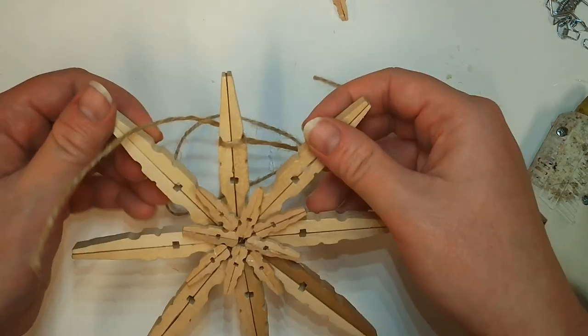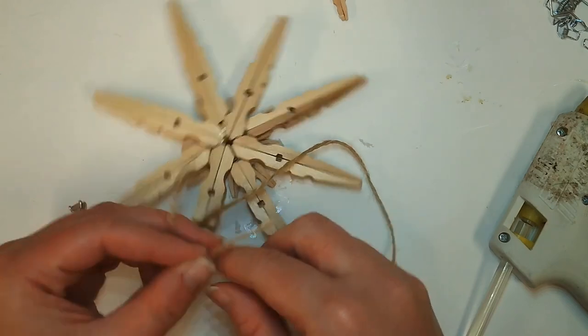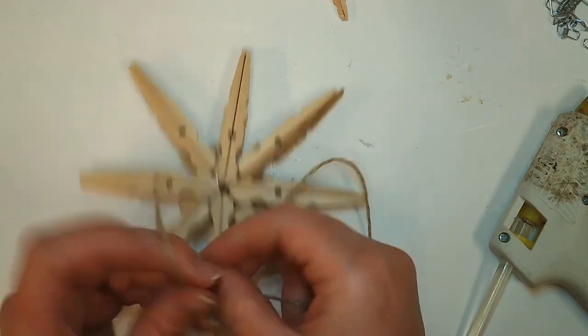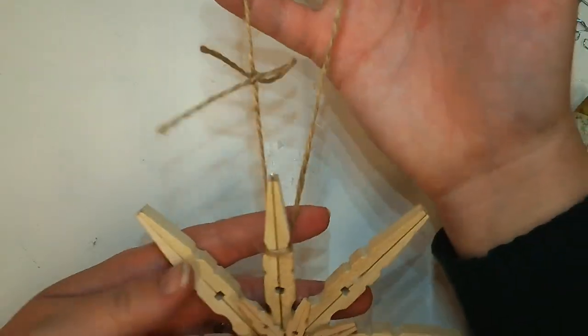You can also put a dab of glue too if you're a little concerned. And then take your two loose ends and create a knot to make a nice loop for you to hold your star.